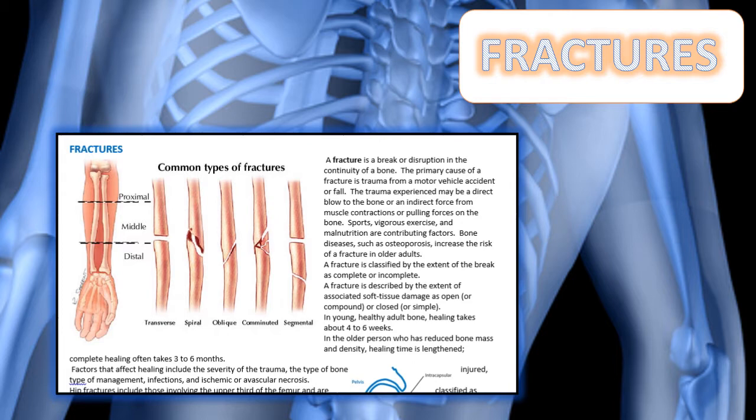Musculoskeletal trauma is one of the primary causes of disability, ranging from simple muscle strain to multiple bone fractures and severe soft tissue damage. Fractures and other musculoskeletal trauma impair the patient's mobility and sensation in varying degrees depending on severity and extent of the injury. The injury is usually definable and it's a correctable event with specific identifiable risks.